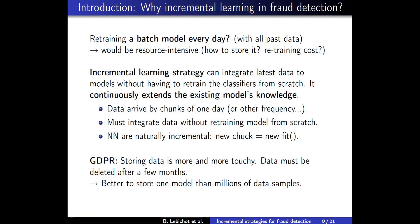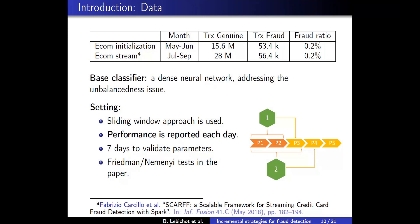Before going to the experimental part, let's summarize our data and setting. Worldline provided us five months of e-commerce credit card transactions. We chose to investigate three months as a stream, keeping two months for initialization. The fraud ratio is well below one percent. For the base classifier, Worldline asked us not to reveal too much information, but we can say it is a dense neural network addressing class imbalance. We report Precision@100 computed each day. We set aside seven days to validate parameters, and statistical significance tests — Friedman-Nemenyi tests — are in the paper.